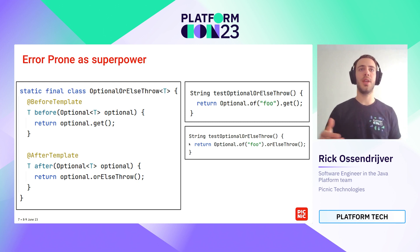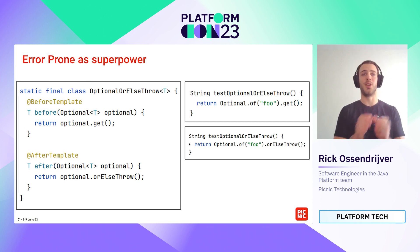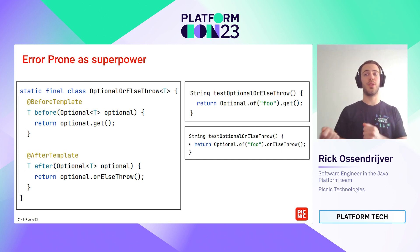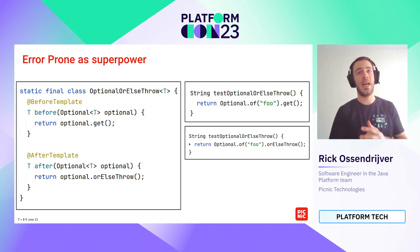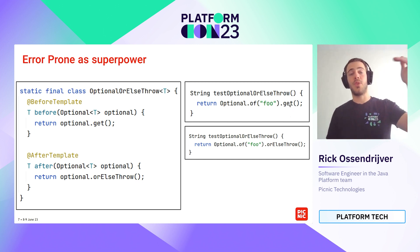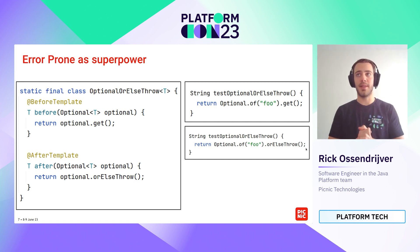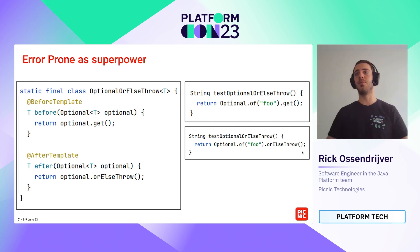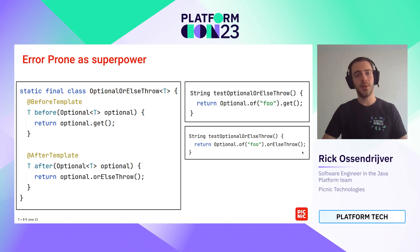Another thing Error Prone can help with is API changes. A fairly well-known example is Optional.get. At some point, Optional.orElseThrow was introduced, but most code bases had already heavily used Optional.get. It is actually recommended to use orElseThrow instead of get. Running this Refaster rule over your code base will rewrite all occurrences from dot get to dot orElseThrow.